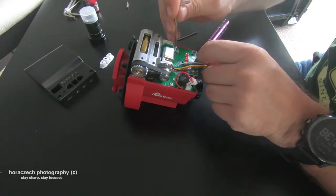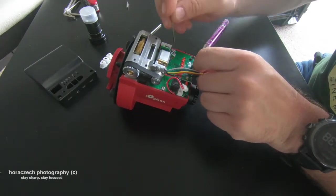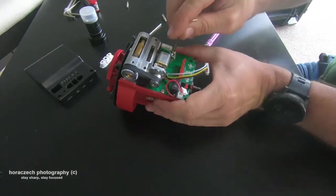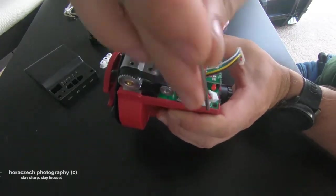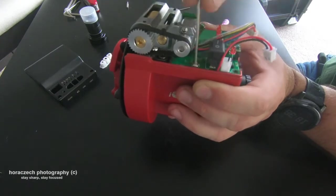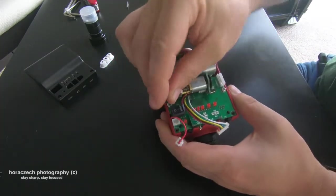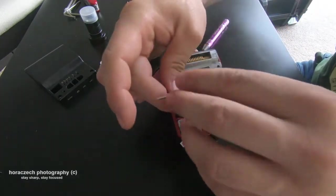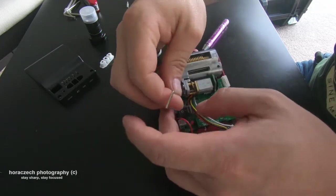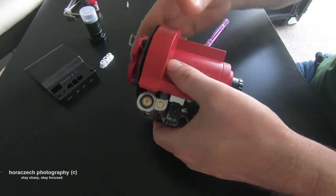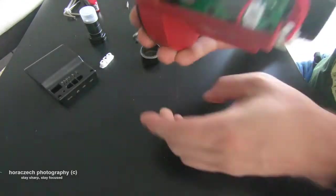Now we can unscrew those silver ones on the top, there's one here, and one on the other side just where the switch button is. So we're gonna loosen those. After we do that, the board is gonna be pretty much freely moving.